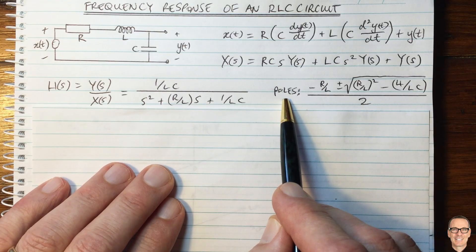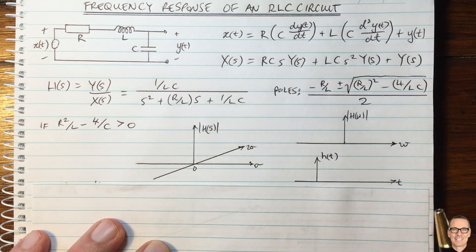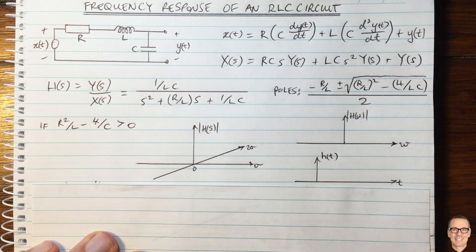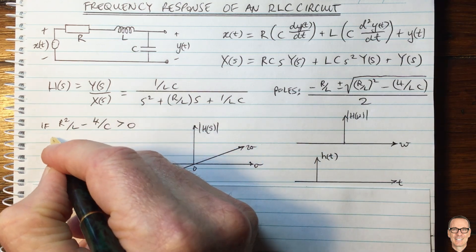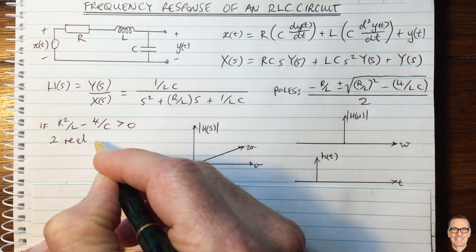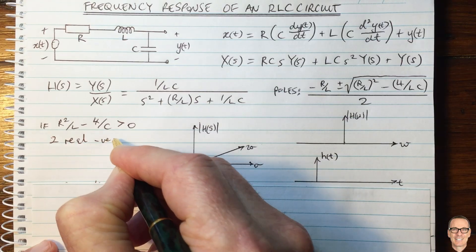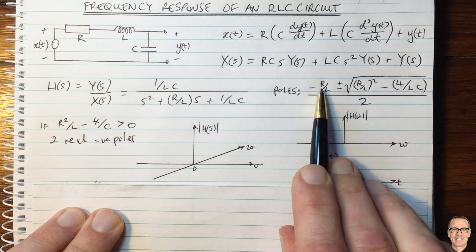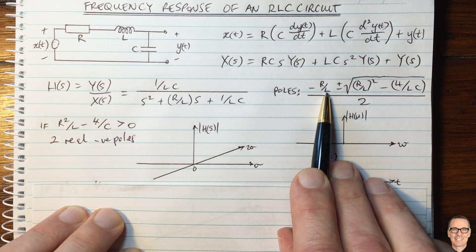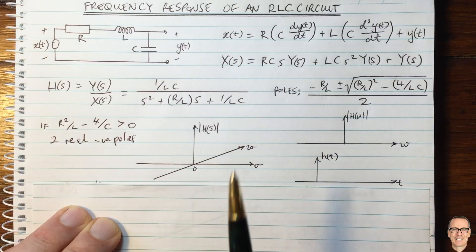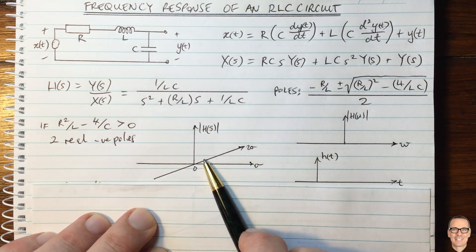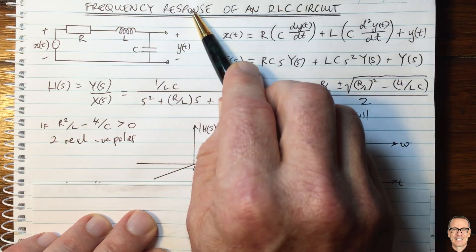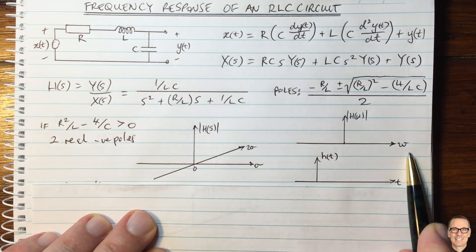Let's consider the first scenario where the term inside the square root is positive, meaning there are two real-valued negative poles. We can confirm the poles are negative because the square root term is less than R/L. We'll look at the Laplace transform, plot it in the S-plane, and then visualize the frequency response as a function of frequency, and also find the impulse response.